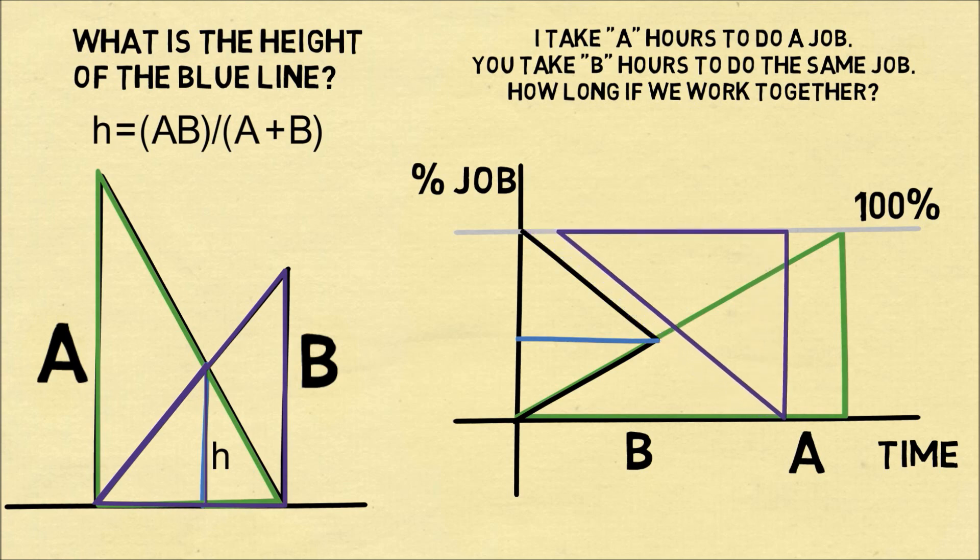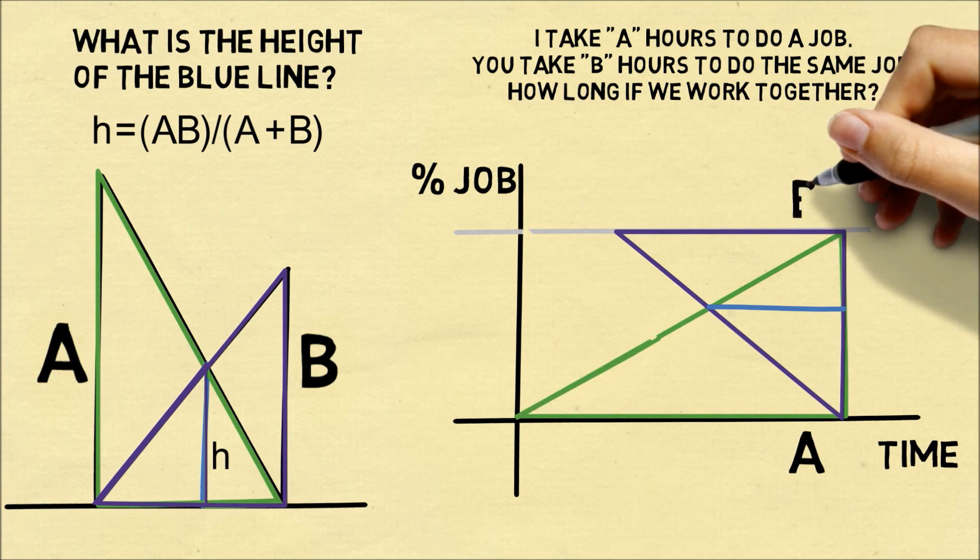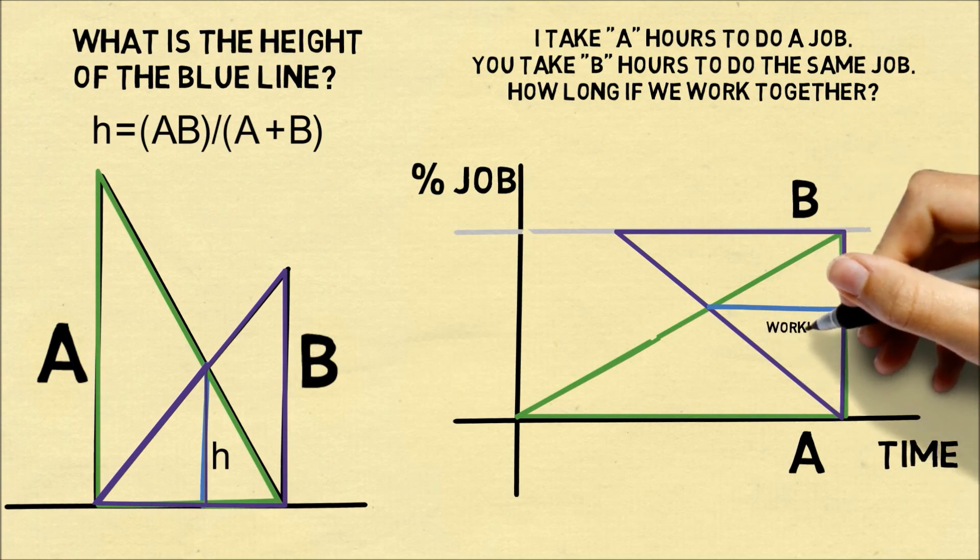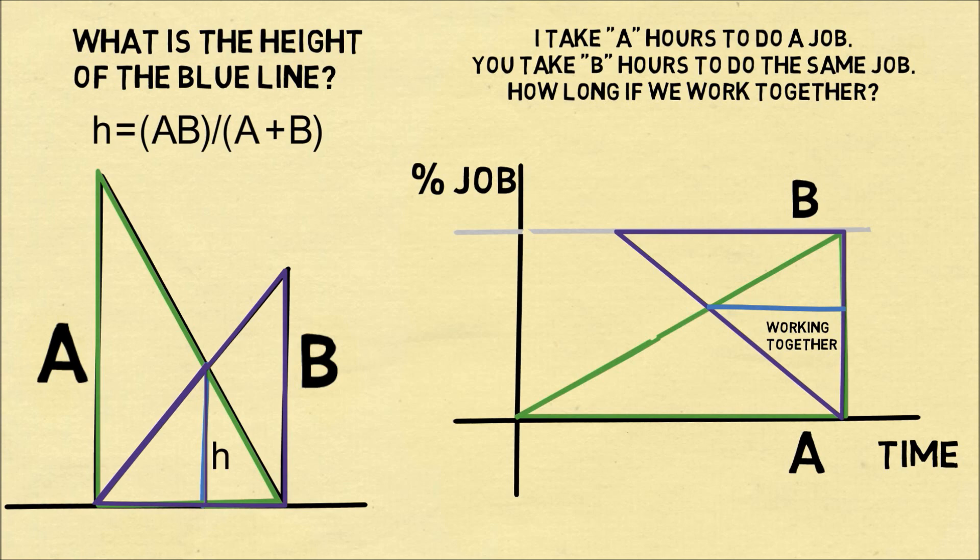And that's the blue distance. If I translate over the purple triangle and I move over this blue distance, and then I clean up the graph a little bit, you'll exactly see that this blue distance is the amount that we're working together. And the geometry is exactly the same as the previous problem we've just solved. Therefore we can conclude the time it takes to work together is the same amount, a times b divided by a plus b.